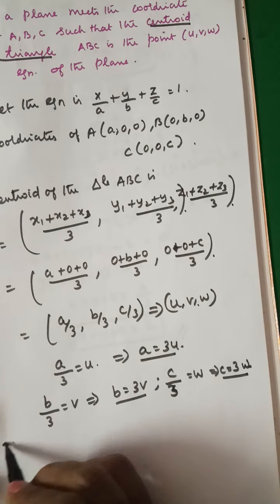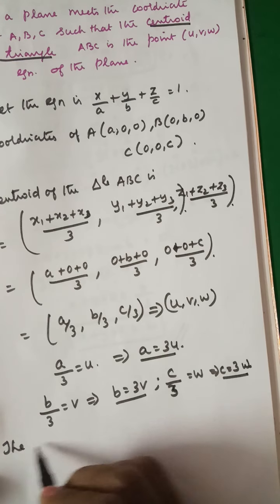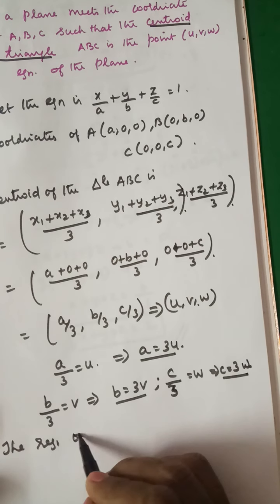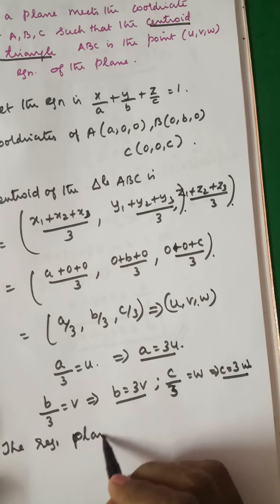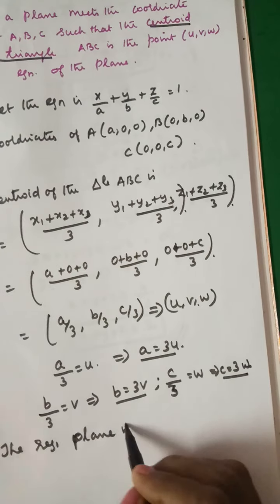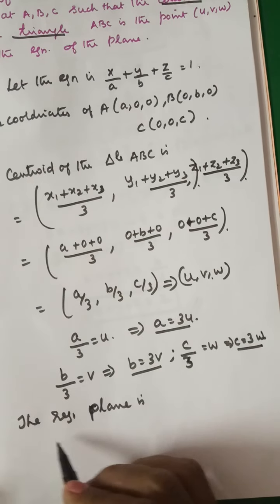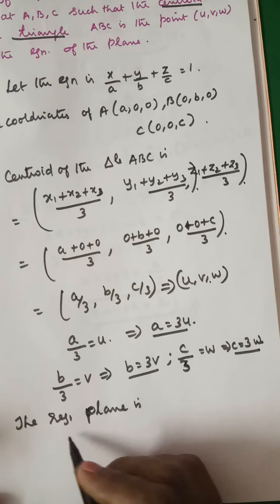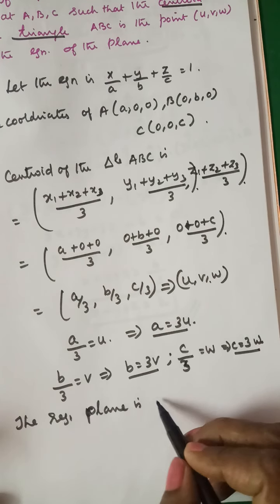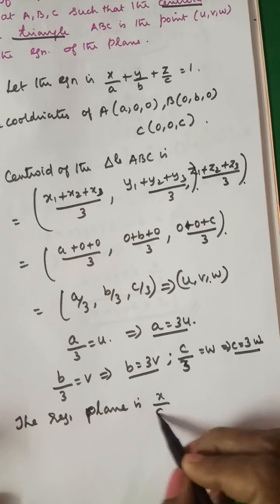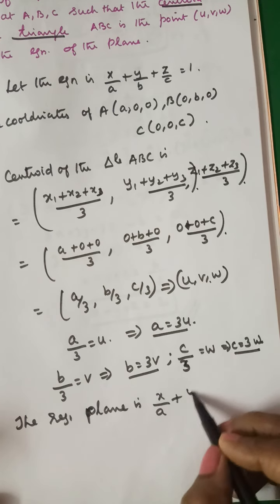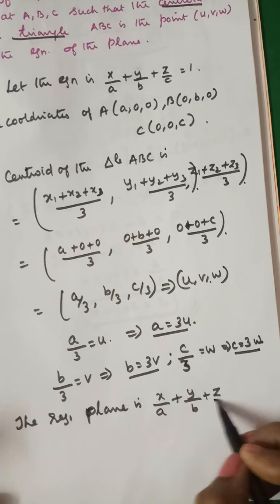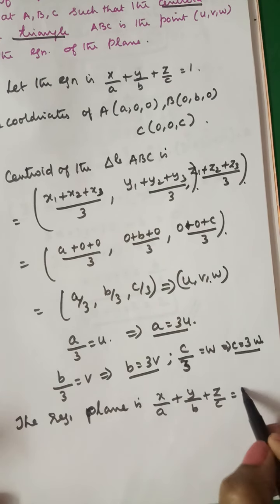Therefore the required equation of the plane is x/a + y/b + z/c = 1, substituting a = 3u, b = 3v, c = 3w to get the final equation of the plane.